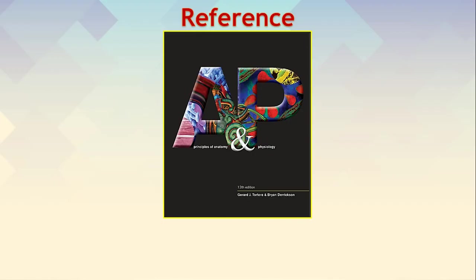With this we finish the adrenal gland, which is divided into two regions — the adrenal cortex and adrenal medulla — producing different sets of hormones.